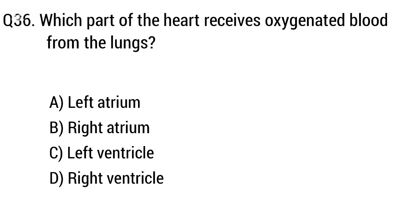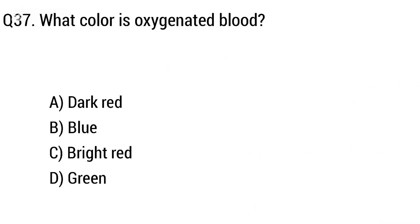Question 36: Which part of the heart receives oxygenated blood from the lungs? Option A: left atrium, B: right atrium, C: left ventricle, D: right ventricle. The right answer is option A, left atrium.